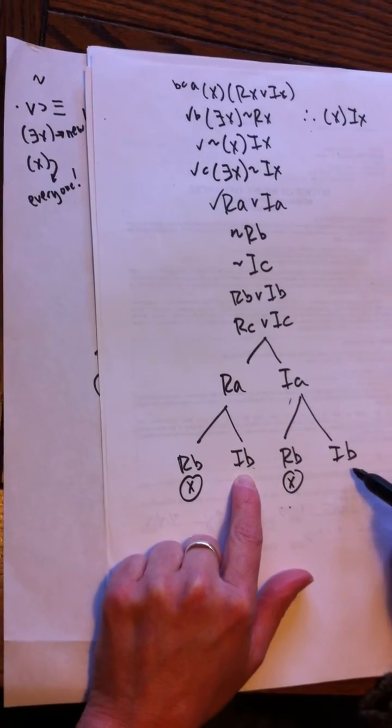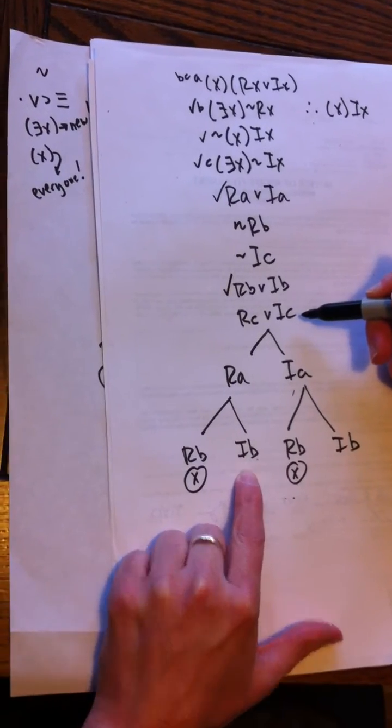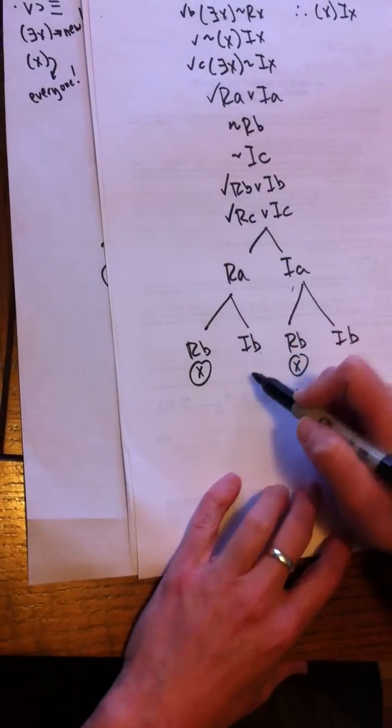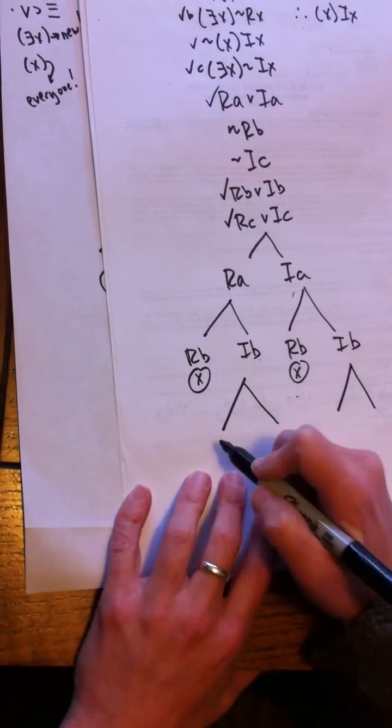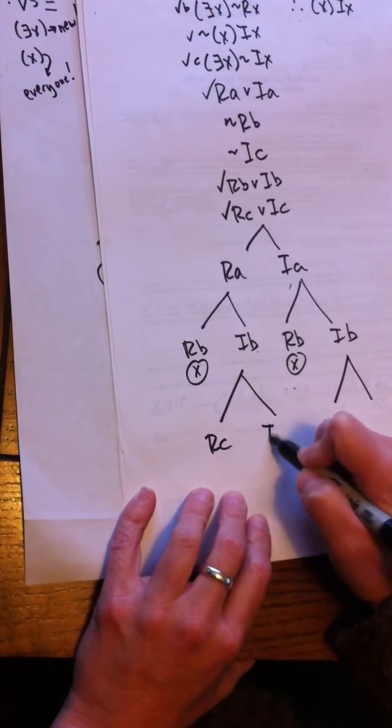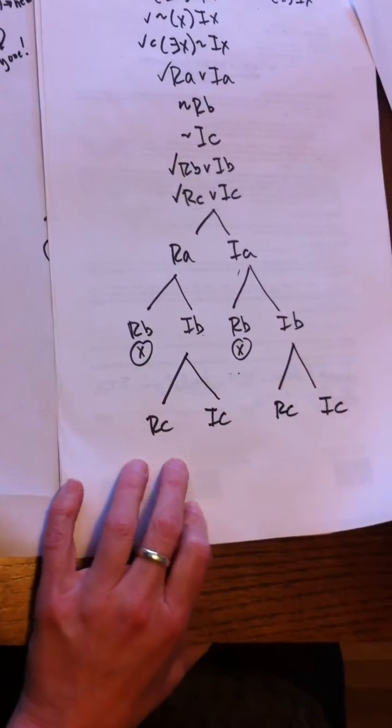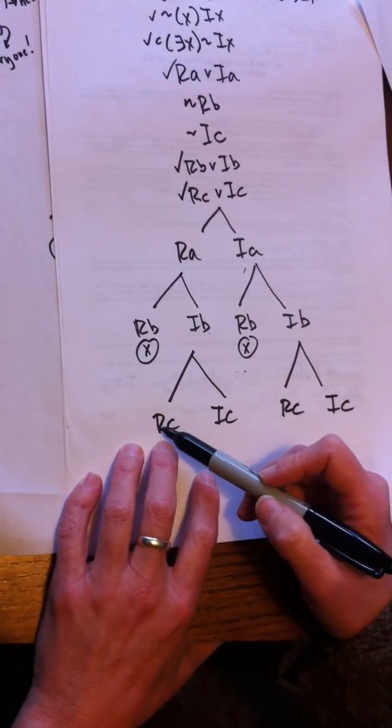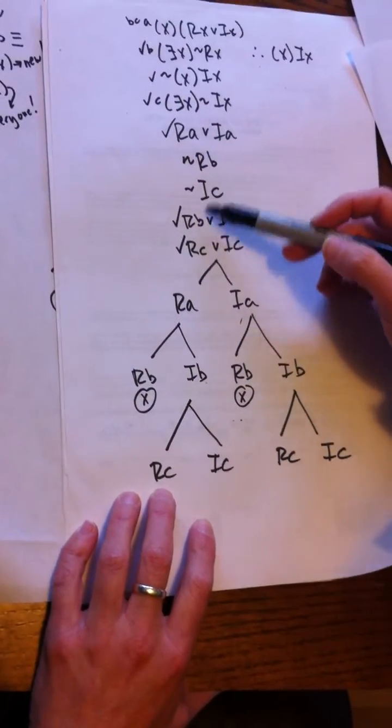So now I have two open paths, but I'm not done because I still have one more disjunct to carry out. So I'll do that here. Again, two paths to do it in both places: Rc, Ic, Rc, Ic.